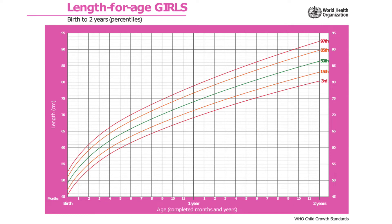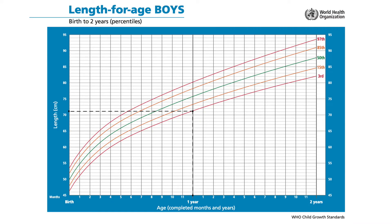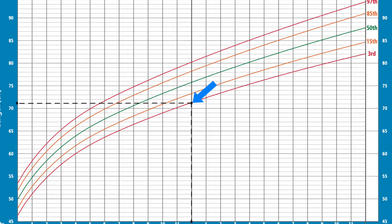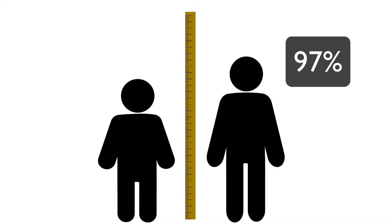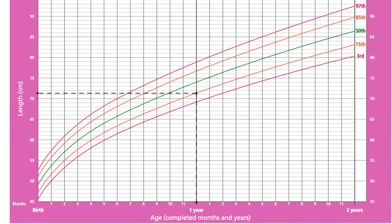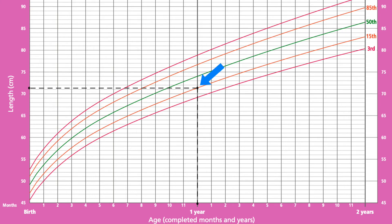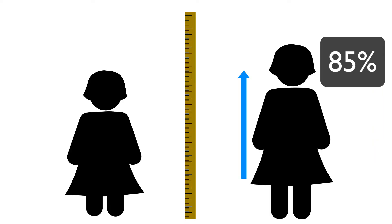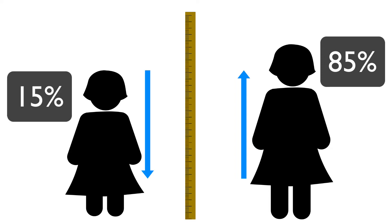Let's understand each percentile line with specific examples. In this graph, Madhav's length is plotted on the third percentile line, meaning that ninety-seven percent of children his age are taller than him, and only three percent are shorter. In this graph, Anu's length is plotted on the fifteenth percentile line, meaning that eighty-five percent of children her age are taller than her and only fifteen percent are shorter.